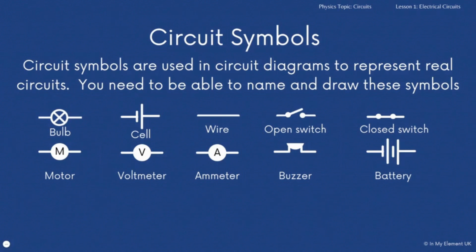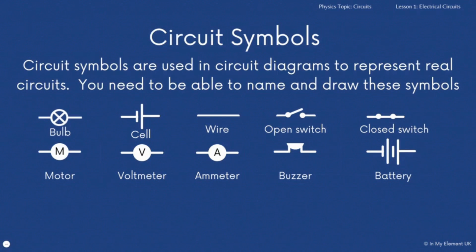And finally you've got the battery. You need to be able to put together all of those symbols into a diagram. So you might be given a question that says: draw a circuit diagram using a battery, wires, two bulbs, and an open switch. You would be expected to be able to do that successfully. You shouldn't have to label them — you can label them — but they are testing that you know which symbol to use for which component. So it's important you learn those.